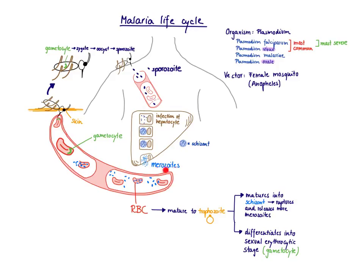The merozoite form now has the capacity to infect the red blood cell. Once inside the red blood cell, it starts feeding — eating hemoglobin. This feeding stage inside the red blood cell is called the trophozoite; 'tropho' is Greek for feeding. The trophozoite has a very characteristic shape visible under the microscope — it looks like a wedding ring, with a ring and a little rock on it.